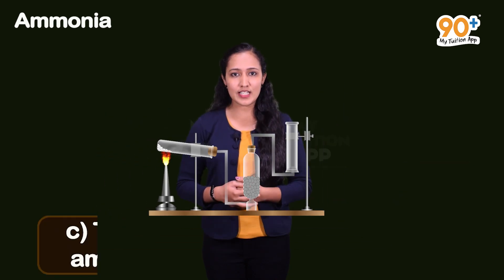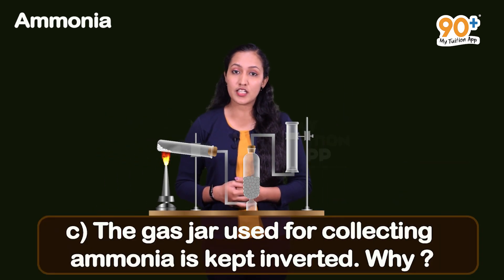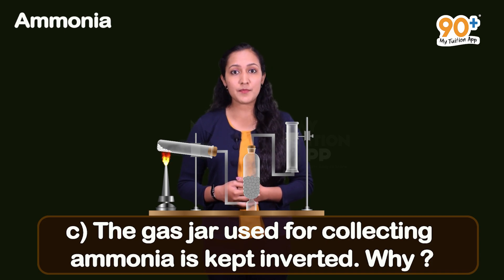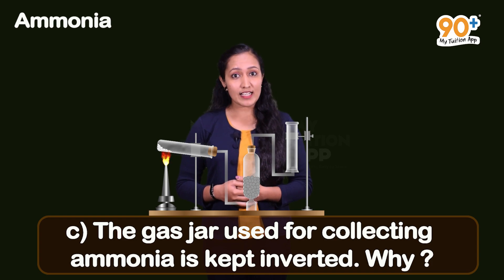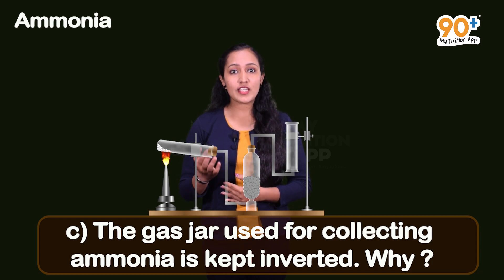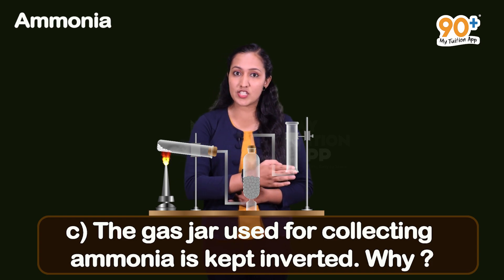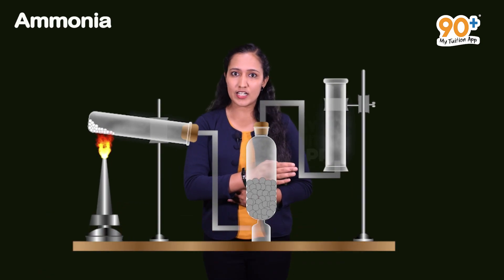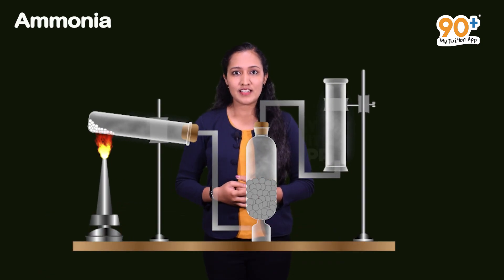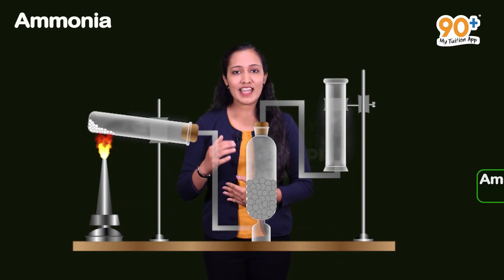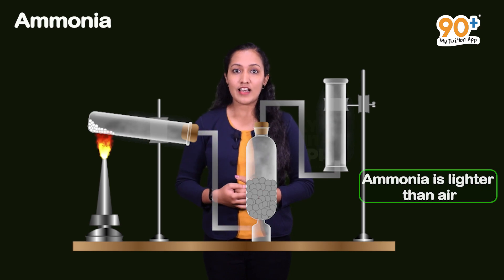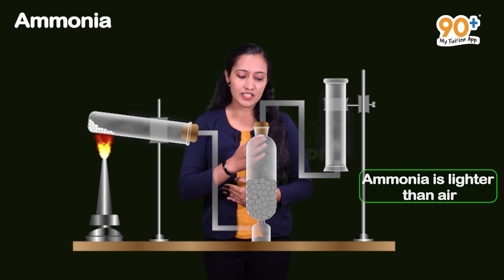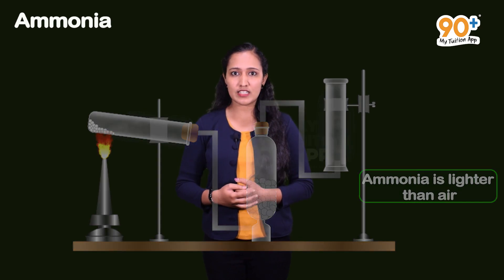Now let us look at the C question: the gas jar used for collecting ammonia is kept inverted. Why? The gas jar used to collect ammonia is kept inverted. We know that ammonia is lighter than air. That is the reason the gas jar is kept inverted.